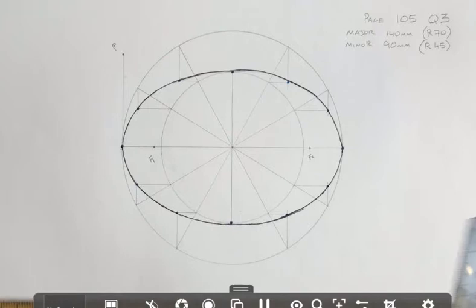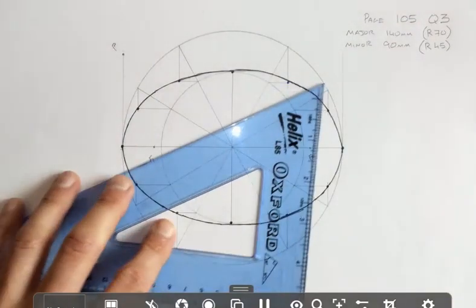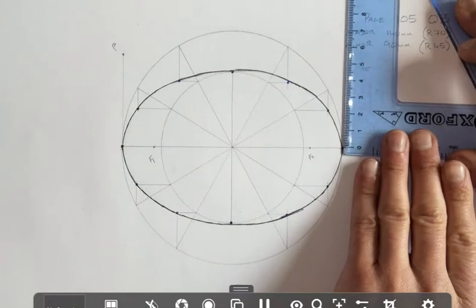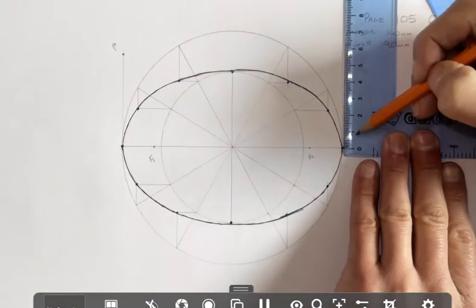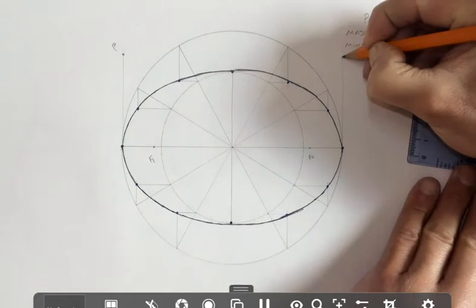Over the other side I did the exact same. Construction line coming up. And I measure up 55 millimetres, all the way up to 55 millimetres. That gives me my point Q.